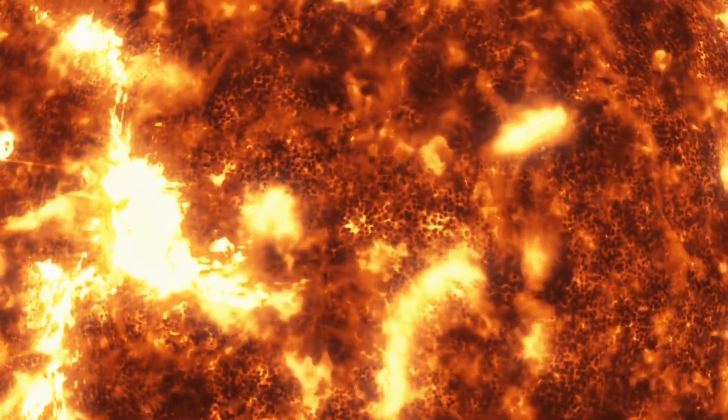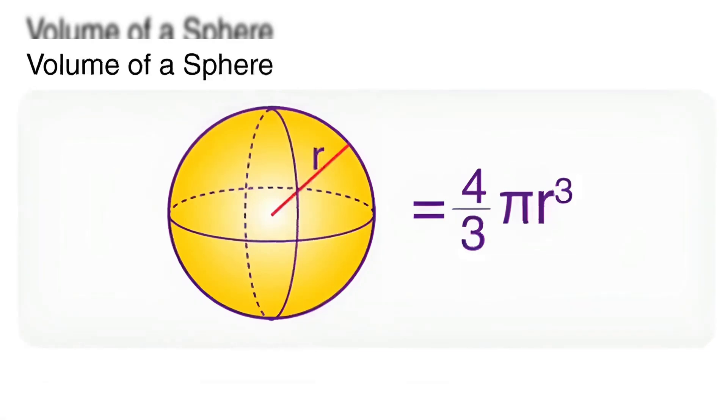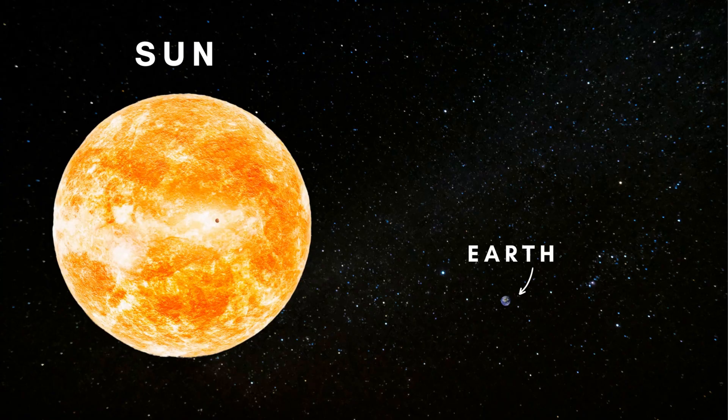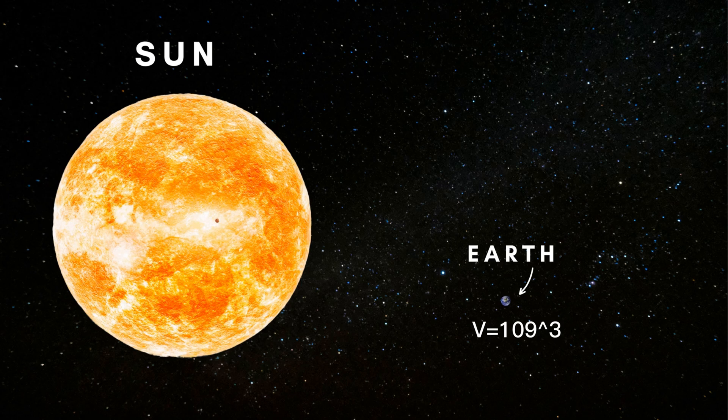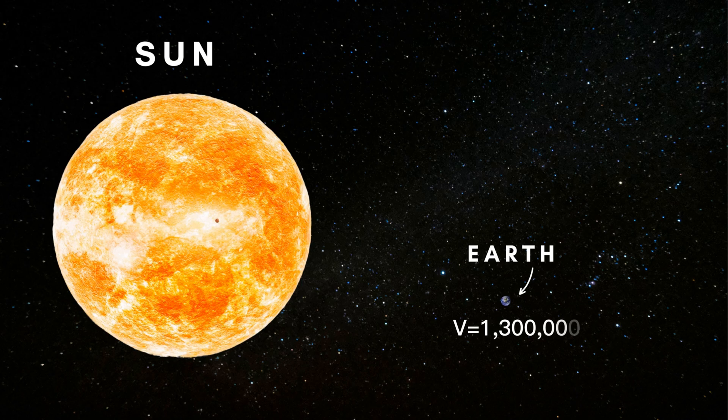How big is the sun? The formula for volume is V = 4/3πr³. The sun's diameter is equivalent to 109 Earths. The volume of the sun compared to Earth is equal to 109 × 109 × 109, which is approximately 1.3 million times larger. So the sun can fit around 1.3 million Earths inside it.